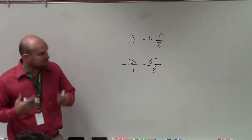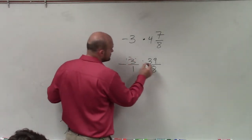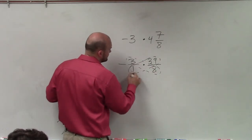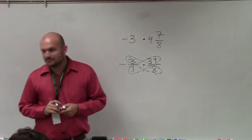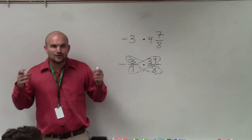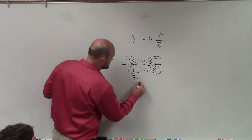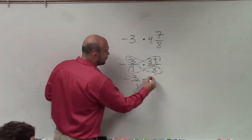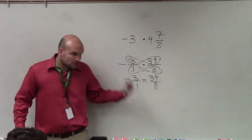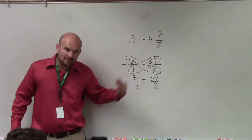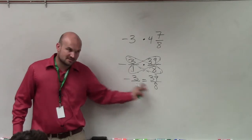Now, when we multiply fractions, please do not ever cross multiply. No. Please erase that from your memory — do not ever cross multiply when you need to multiply fractions. Cross multiplication is only used when we have a fraction equal to another fraction, with an equal sign in between them. That's when we cross multiply.